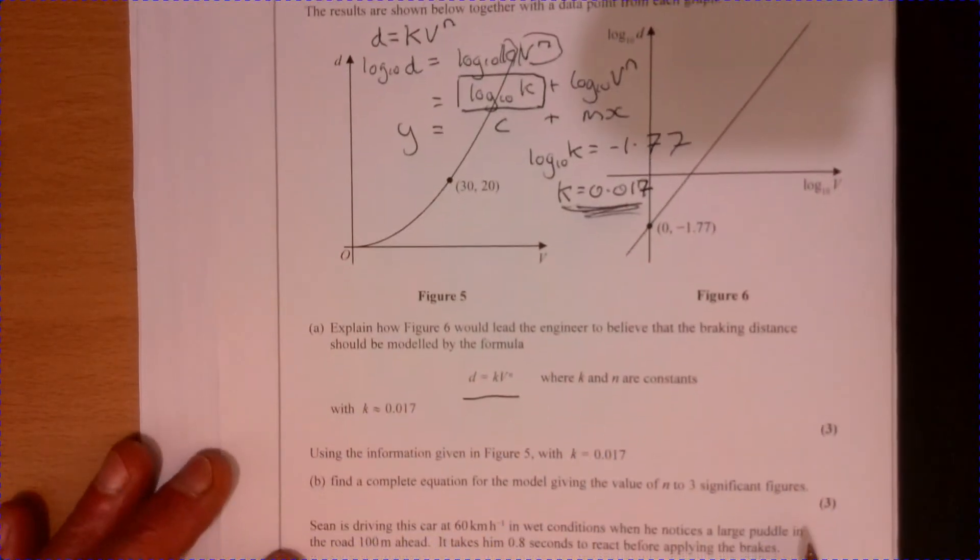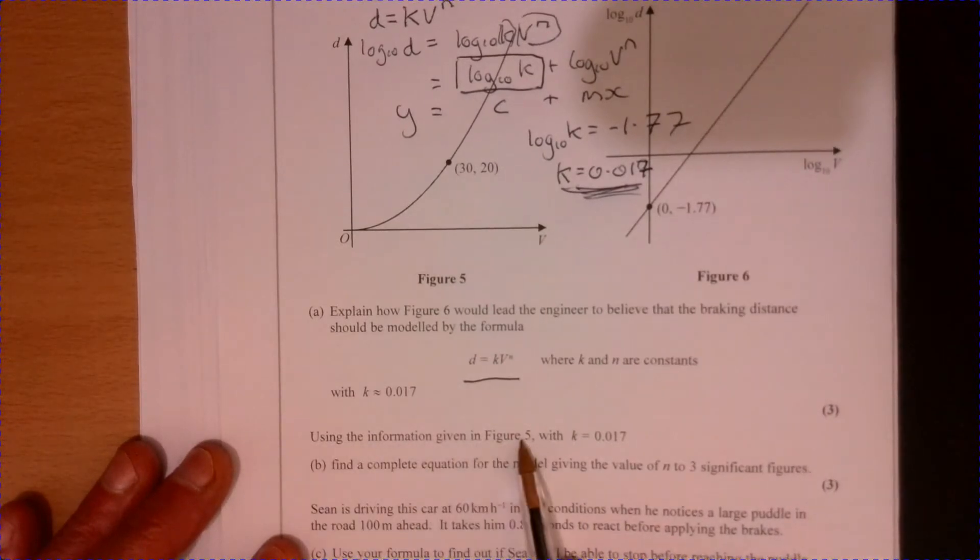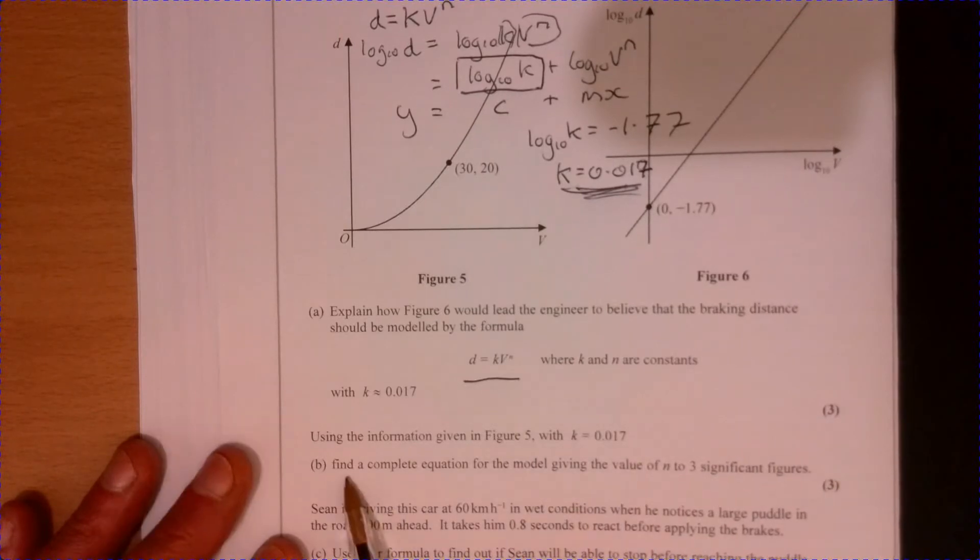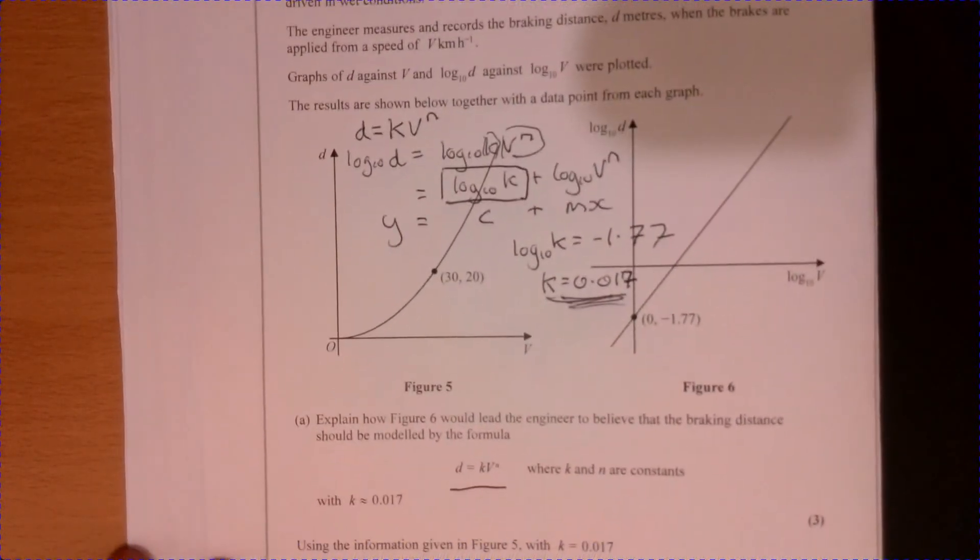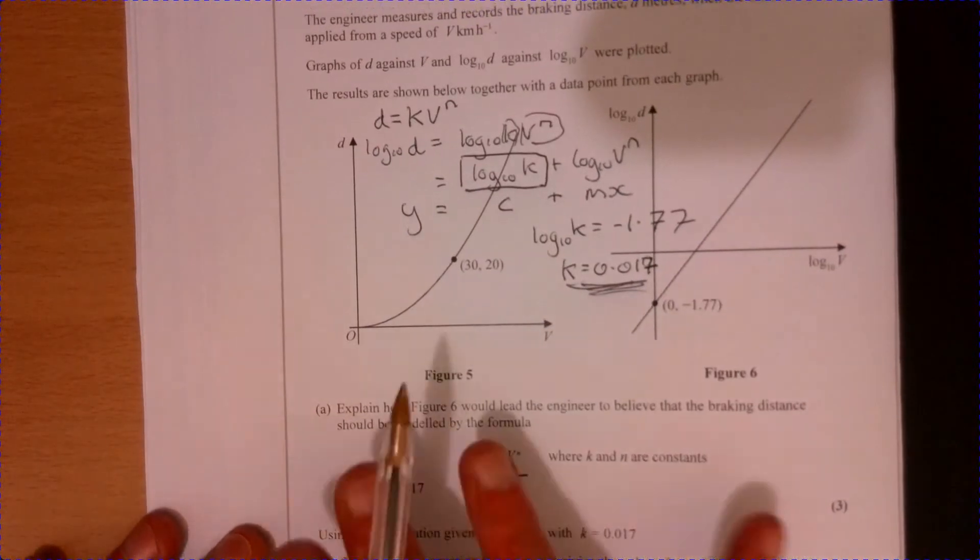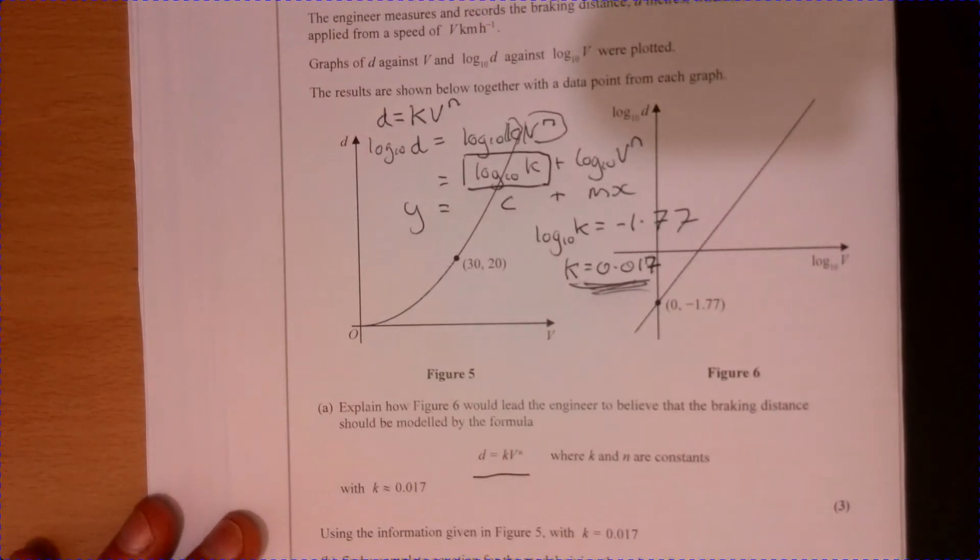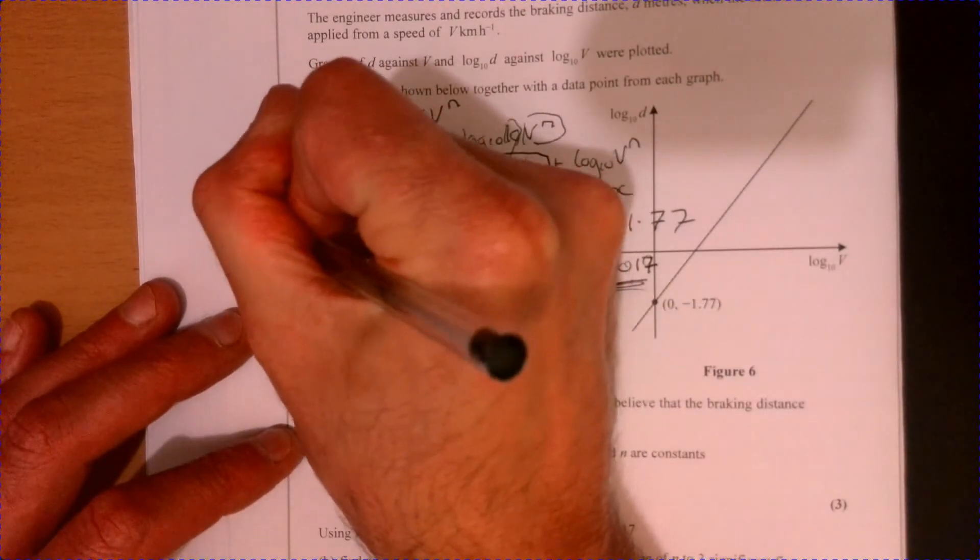Now let's have a look at part b. Part b says use the information given in Figure 5 with k equal to this value. It says find a complete equation for the model given the value of n to three significant figures. I'm going to do mine up the side here so you can see it.